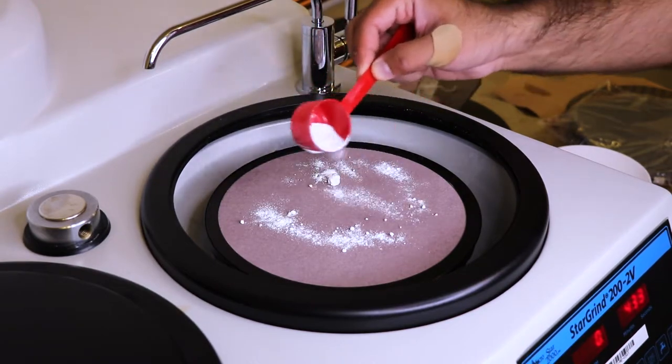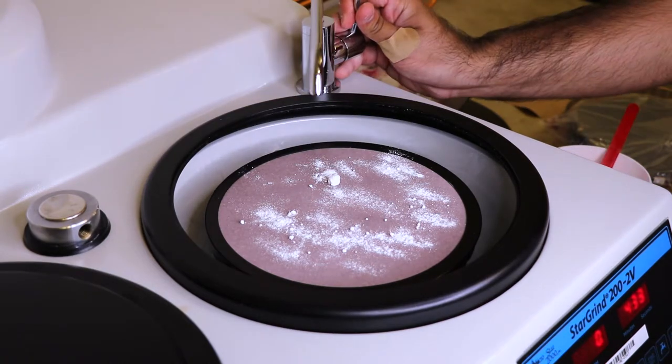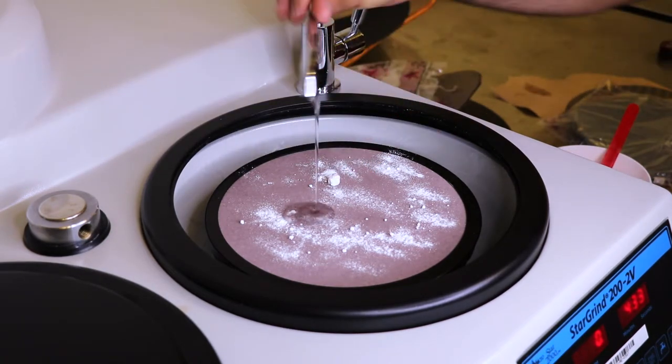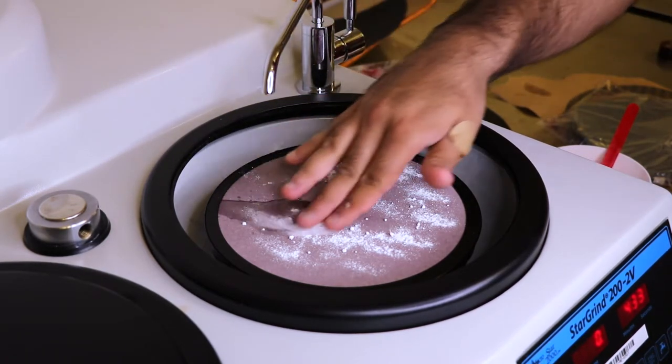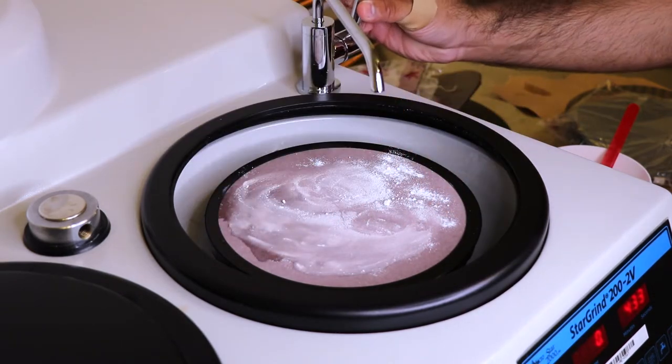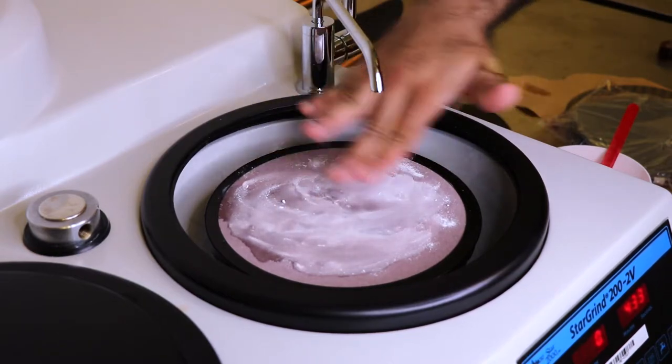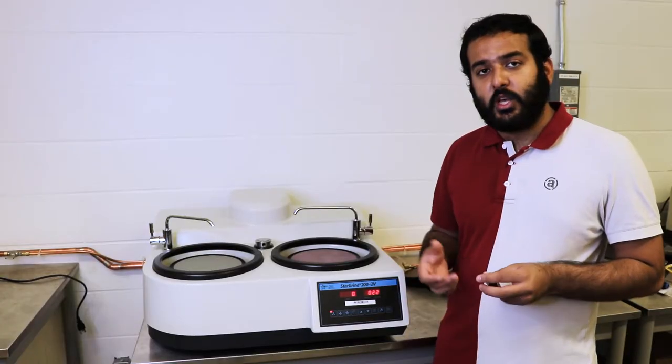Then use a little bit of water to make it into a paste. And then as you polish, add a bit of water or keep the water trickling just so that you don't wash the alumina off, but you keep it moist.